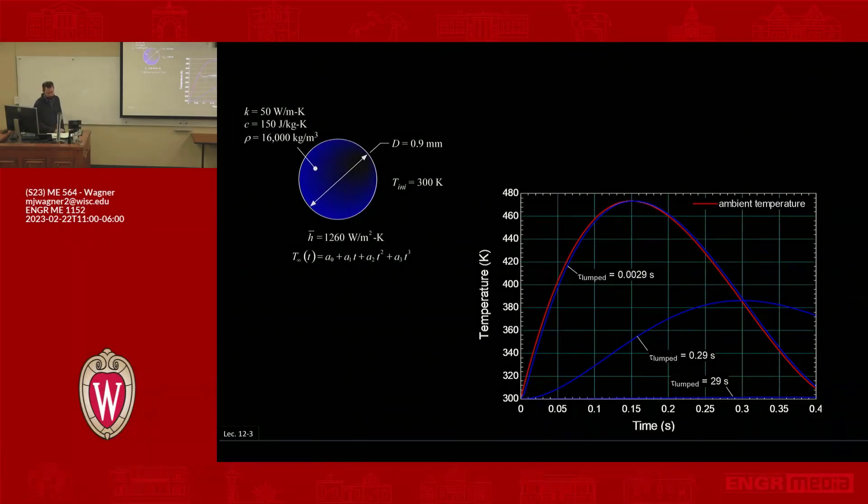So the next concept that we want to understand before you even get into deriving the problem is something called the lump capacitance time constant. So lumped capacitance time constant, and this is often called tau LC, tau lump capacitance.